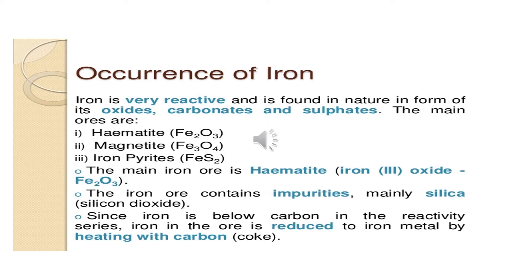The iron ore contains many impurities. Mainly it contains silica, whose formula is SiO2, called silicon dioxide. For this particular topic — occurrence of iron in nature — a one mark question is always asked: write the formula and name of the important ore. For example, writing 'hematite' carries half a mark, and writing its formula Fe2O3 carries another half mark. This kind of one mark question is asked in the board exam.